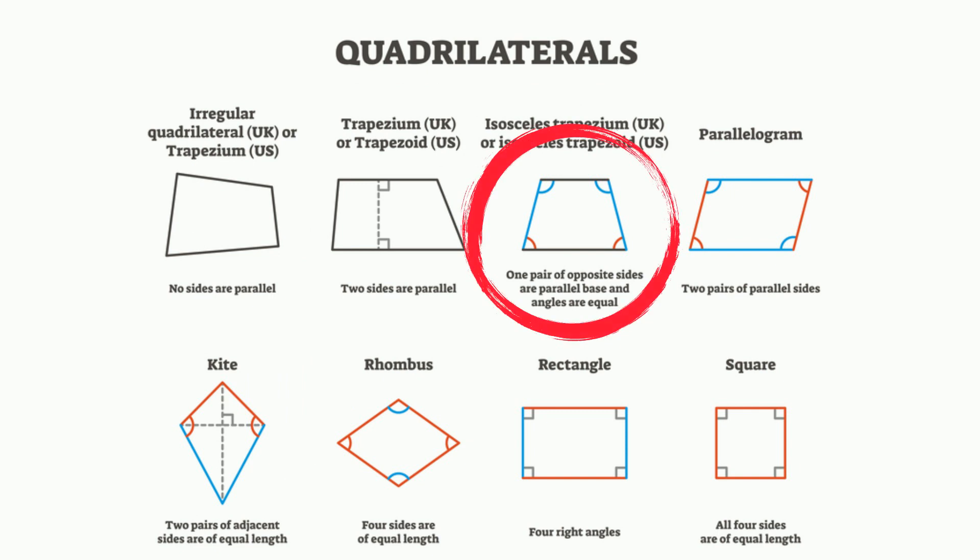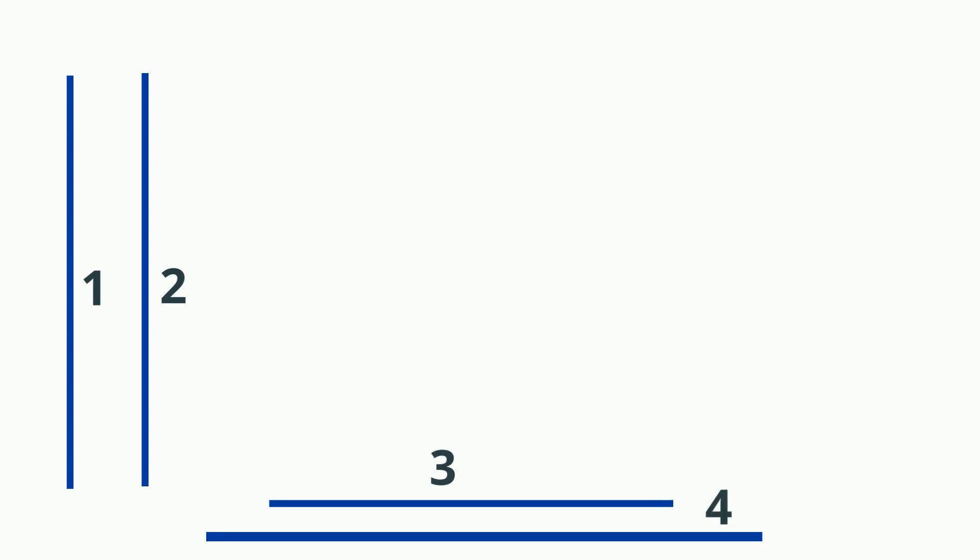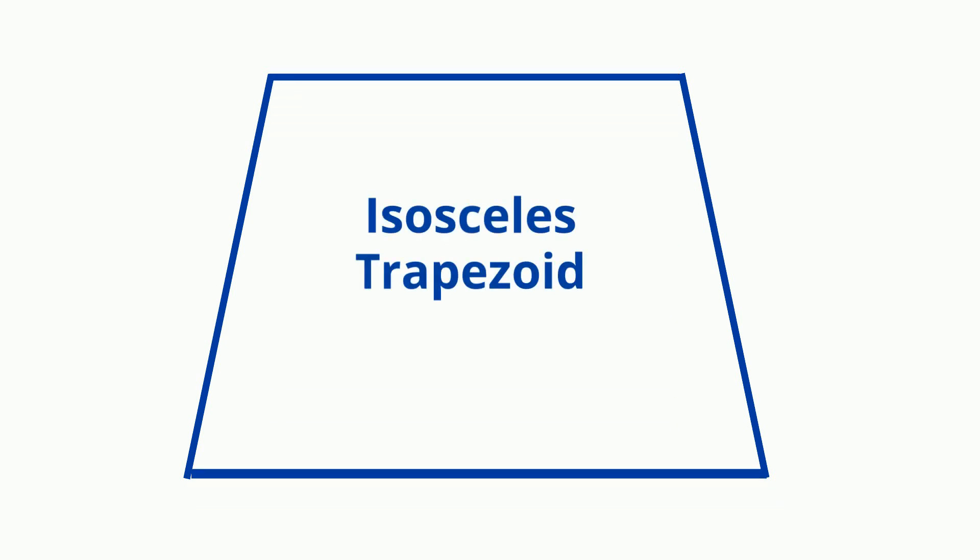An isosceles trapezoid is a quadrilateral, therefore it has four sides. An isosceles trapezoid has legs of equal length and one pair of parallel sides.